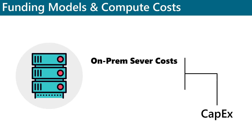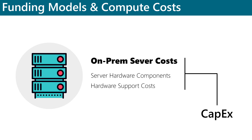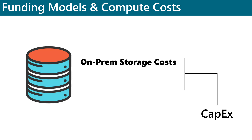Server costs will generally include server hardware components as well as the costs of supporting that hardware. Whenever a server or other hardware component needs to be replaced or added to the on-prem data center, you'll typically use the CAPEX bucket to pay for it. Since this is an upfront cost, it affects organizational cash flow. However, the hardware cost can be amortized over several years. Storage costs will usually include all storage-related hardware and components, along with the cost of supporting that hardware. In larger organizations these costs can become quite large, and as with server costs, these storage costs also fall into the CAPEX bucket.